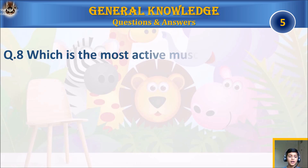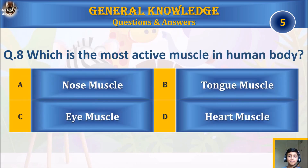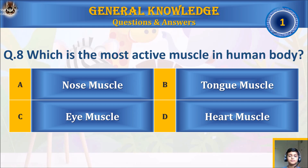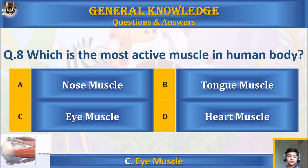Question eight: which is the most active muscle in the human body? A) nose muscle, B) tongue muscle, C) eye muscle, or D) heart muscle? Your time starts. The answer is C) eye muscle.